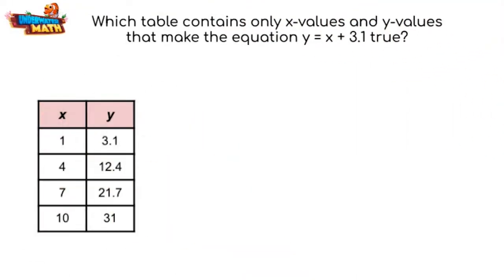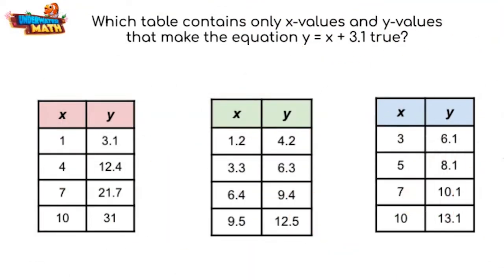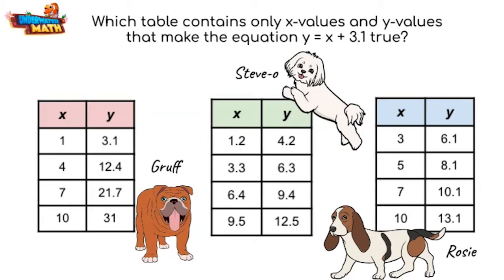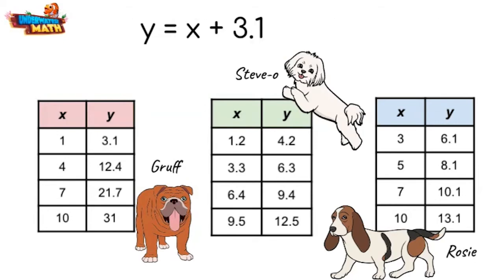Let's try one more. Which table contains only x-values and y-values that make the equation y = x + 3.1 true? This equation tells us that the table we are looking for adds 3.1 to each x-value to determine the y-value.